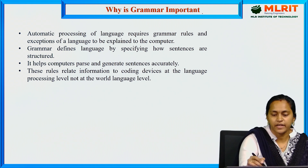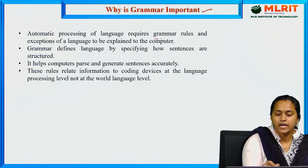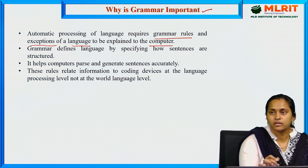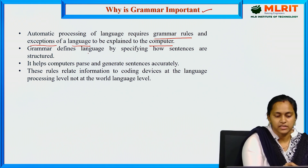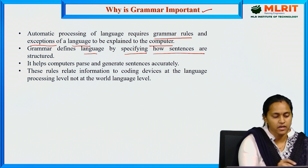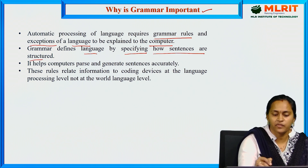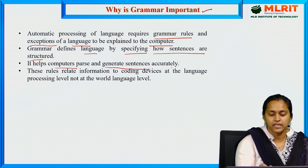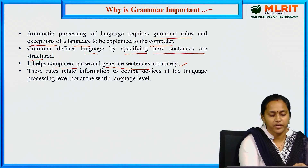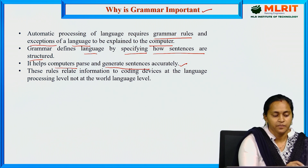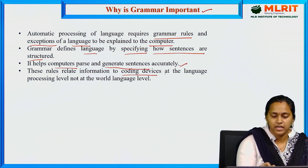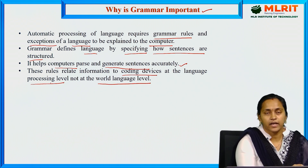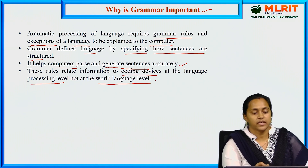Why is grammar important? Automatic processing of language requires grammar rules and exceptions of a language. To explain to the computer, grammar defines language by specifying how sentences are structured. It helps computers to parse and generate sentences accurately. These rules relate information at the language processing level.